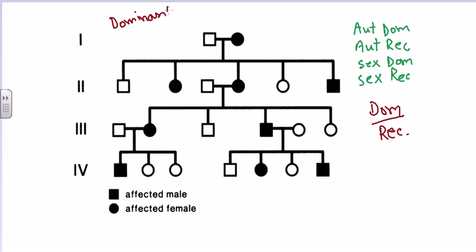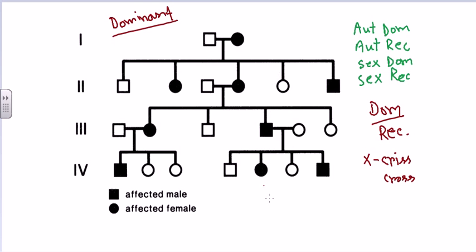The second part is to determine whether it is X-linked or autosomal. In X-linked inheritance, there is a typical criss-cross pattern of inheritance. In autosomal, there is no criss-cross — it can be transferred from mother to son and daughter both. Another important thing to figure out between sex-linked and autosomal disease is to look for whether there is a sex bias or not.